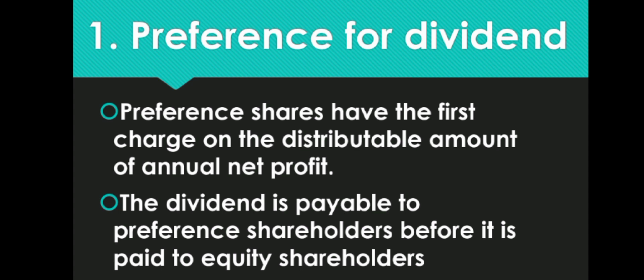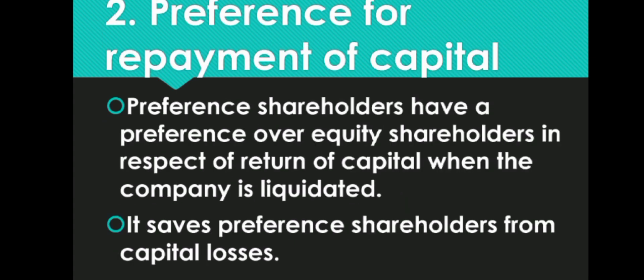Features of preference shares: First, they have the first charge on the distributable amount of annual net profit — dividend pehle preference shareholders ko diya jata hai, baad mein equity shareholders ko. Next is preference for repayment of capital — jab company liquidate hoti hai toh pehle preference shareholders ko capital distribute hota hai, baad mein equity shareholders ko. This saves preference shareholders from capital loss.